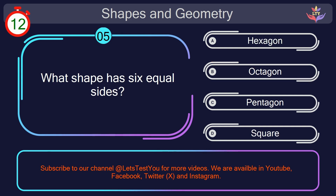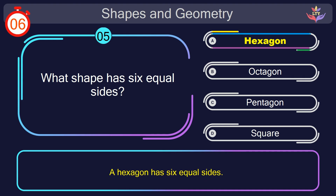Question number 5. What shape has 6 equal sides? Your countdown started. Here we go. The correct answer is option A. Hexagon. A hexagon has 6 equal sides.